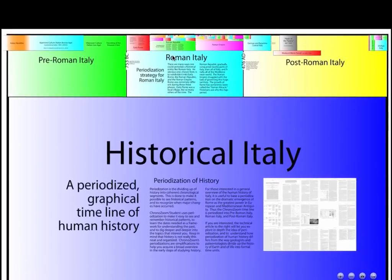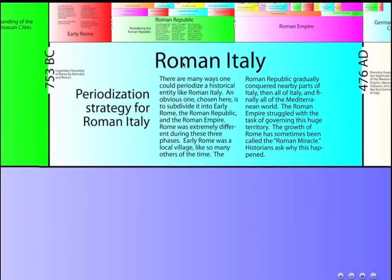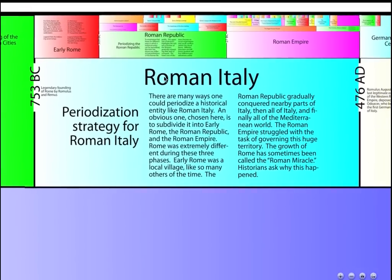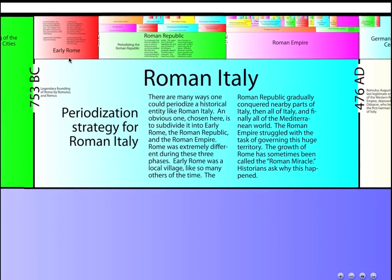For example, in Roman Italy, if we zoom in here, we'll see that's divided into Early Rome, the Roman Republic, and the Roman Empire. This is just an example so we're only providing one source, but in the future we hope to provide different sources of different interpretations of history.